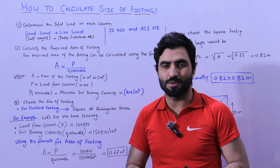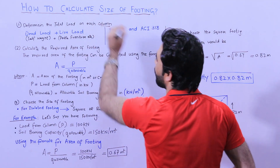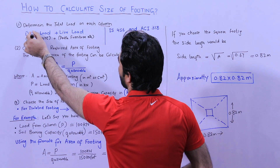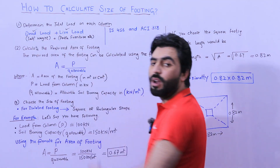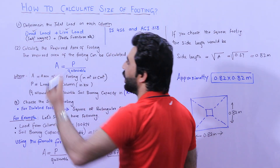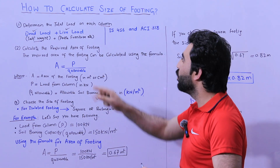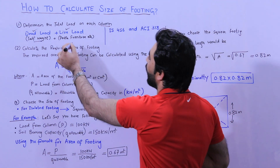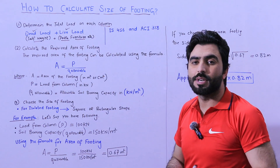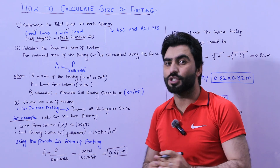So let's get started. First of all, determine the total load on each column. We have two types of main loads: dead load plus live load. The dead load is the self-weight — the self-weight of the column. The live load includes the weight of people and furniture on top of the column, because the column is used inside a residential or commercial building.